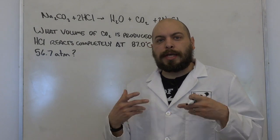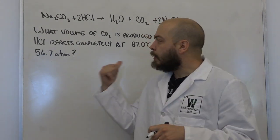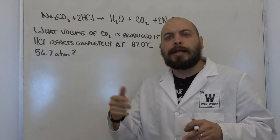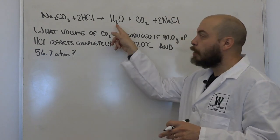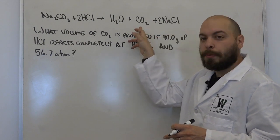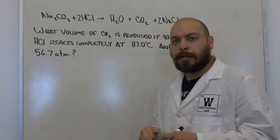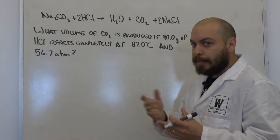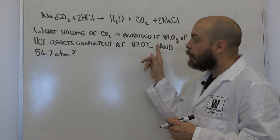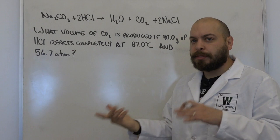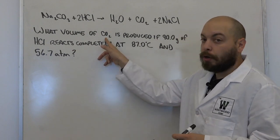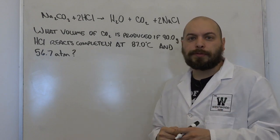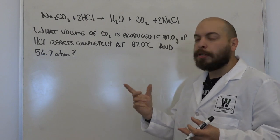The next practice problem requires a slightly different process. We're given a chemical reaction where sodium carbonate reacts with hydrochloric acid. Any time a metal carbonate reacts with an acid, it produces three things: water, a salt, and carbon dioxide gas. Now, we're not given moles directly — we're given grams of hydrochloric acid. We need to figure out moles of carbon dioxide, because when we apply PV = nRT, it's the pressure, volume, moles, and temperature of carbon dioxide in this situation. So we'll first solve for moles of CO₂.